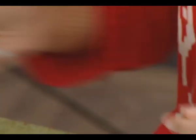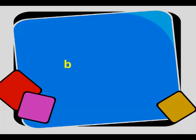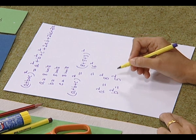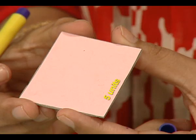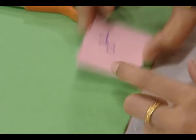The second term on the right hand side is b². We have taken b as 5 units, so b² = 5². We will take a square cut out of side length 5 units, and this square cut out is representing b².